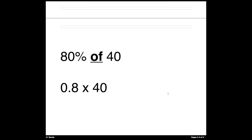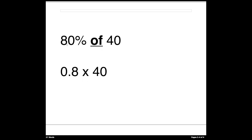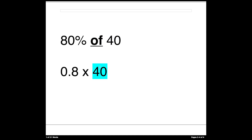In a math problem like '80% of 40,' the word 'of' must come in the middle of the phrase, otherwise it will not make sense. In math, the word 'of' means multiply. So to solve this problem: 80% is 0.8 as a decimal, 'of' means multiply, and 40 is just 40. So you just do 0.8 times 40, and that gives you the solution.